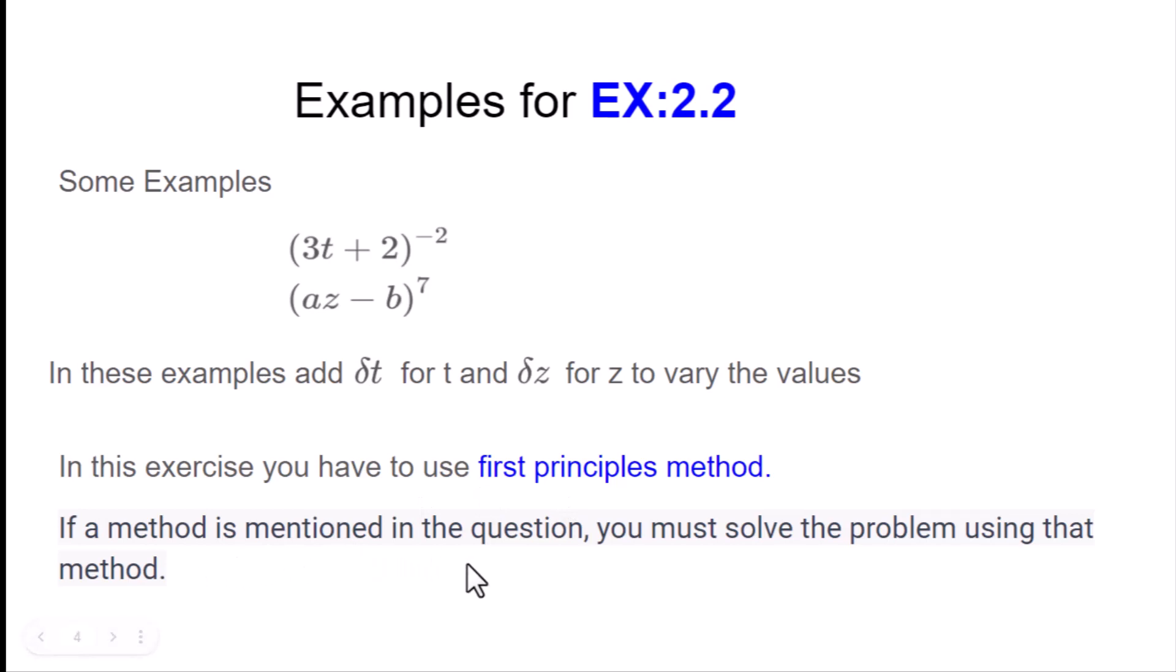If a method is mentioned in the question, you must solve the problem using that method. This means in the papers or exams, if you have mentioned that you have to do the first principle or the ab-initio method or the definition rule, whatever is mentioned, you have to solve it accordingly. You can write formally that by using the first principle method or by using the ab-initio method, your answer will solve the question.